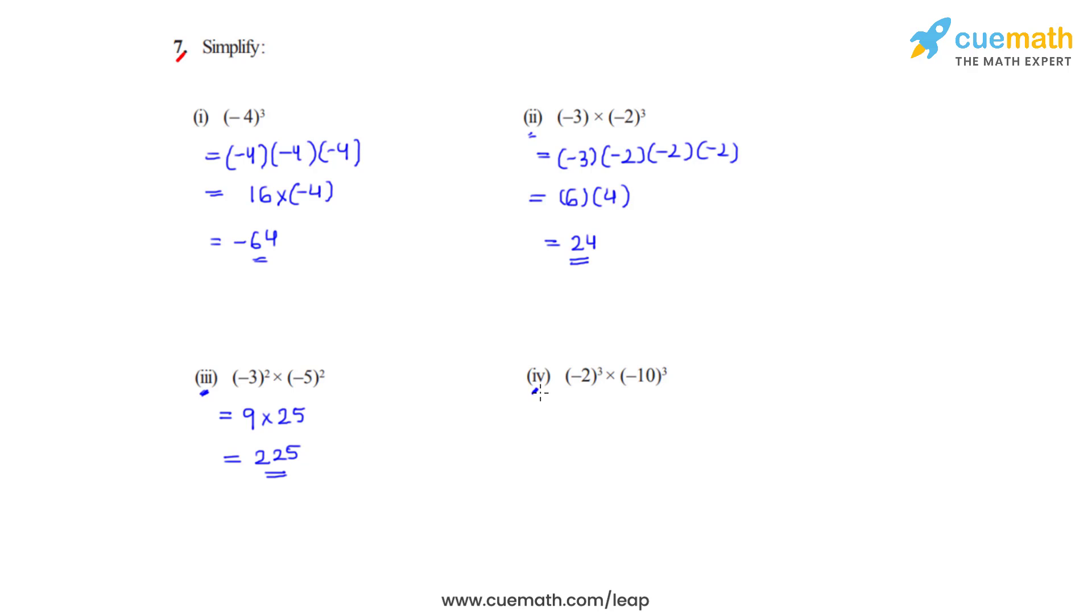The last bit of this question is negative 2 raised to 3. So whenever a negative is raised to an odd number, the result will always be negative. So we write it as negative 8.